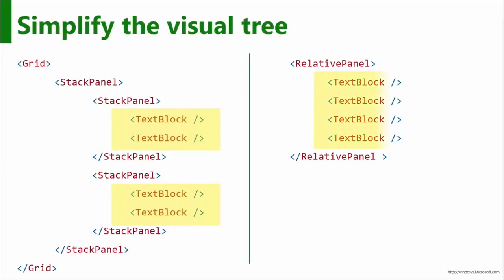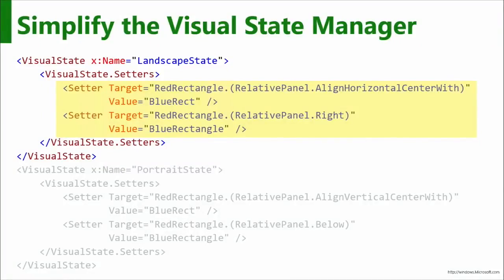The first benefit from the relative panel is that it simplifies adaptability. When I need to rearrange elements, all I have to do is set their relative location to each other to be different, and they all move. If I were trying to do this today in a grid, I've really got to manipulate things around — making sure I've got enough rows, dealing with empty rows and all that complexity. It also simplifies the visual tree: on the left is a classic scenario of stack panels of stack panels, but that same UI can be accomplished with a relative panel and just four text blocks — much more concise, much cleaner, with a performance advantage as well.